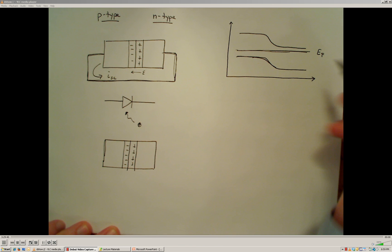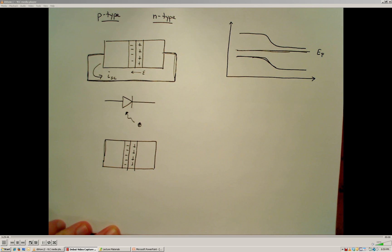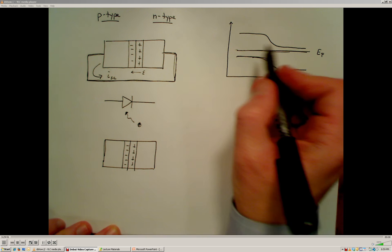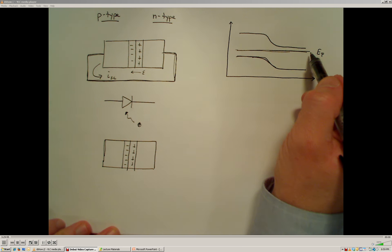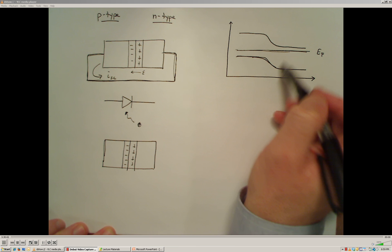Remember that the Fermi energy level, the difference in the Fermi energy level can be measured by voltage, or that is a definition of what the voltage is. So if there's no potential, then this has to be flat all the way across, and we can use our band diagram to see that we have our built-in potential in this region right here near the junction.